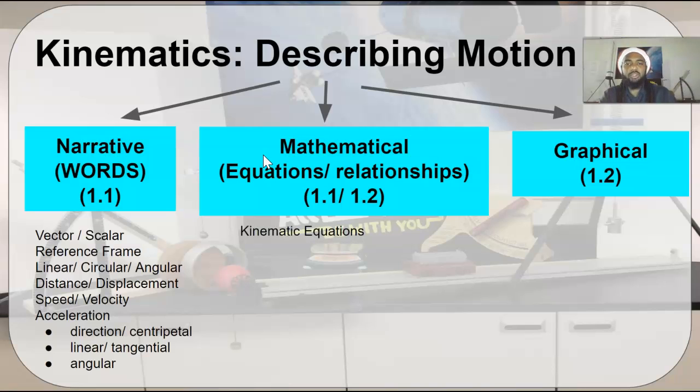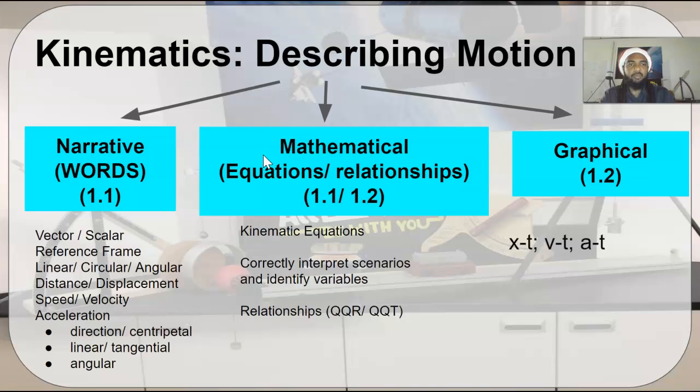Under the mathematical equations, or mathematical part of it, you need to know the kinematic equations, you need to be able to correctly interpret scenarios and identify variables. We'll talk about this. And then use these equations and relationships in a scale called QQR or QQT, qualitative quantitative reasoning or translation, as the case may be. Under graphical representations, there are three types of graphs: position, velocity, and acceleration versus time. You need to be familiar with the shapes of these graphs and be able to describe them. You need to be able to understand slopes, intercepts, and areas of these graphs.